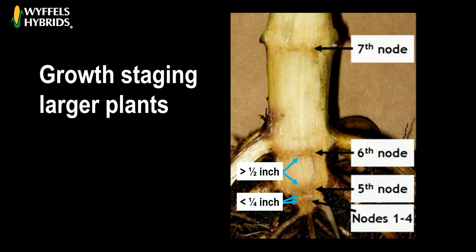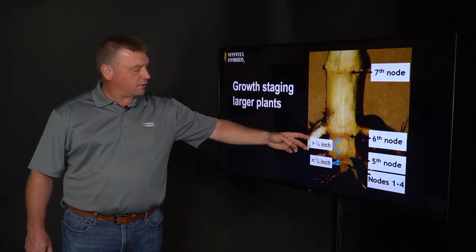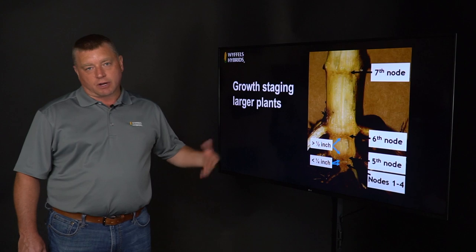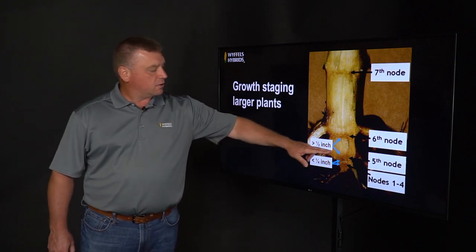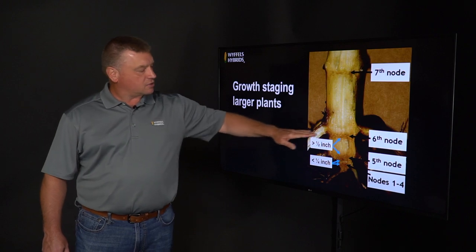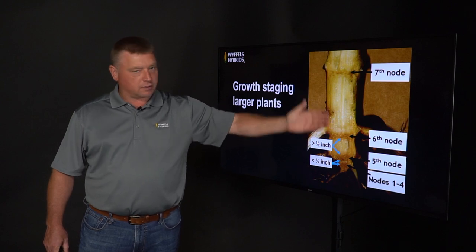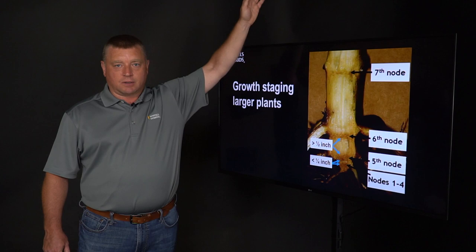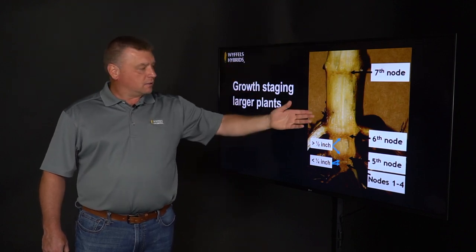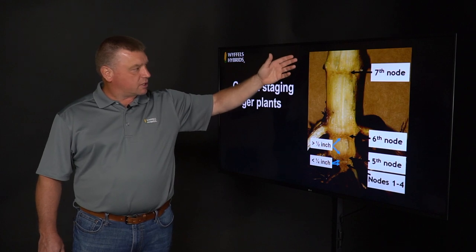In a smaller V8 to V10 corn plant, you'll see about a quarter-inch space, which denotes the fourth to the fifth node. As that corn plant gets bigger — say waist-high or taller — even that space will be compressed together. So I always look for an internodal space greater than a half inch, which shows us where the fifth and sixth node is. That's important because if you can find the sixth node, you can usually find the leaf sheath attached right at that node, and then count the collar leaves above it to determine what stage that plant is at.